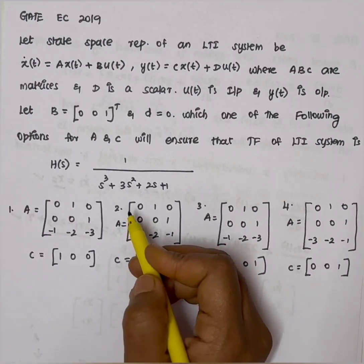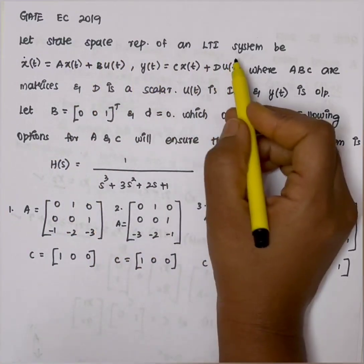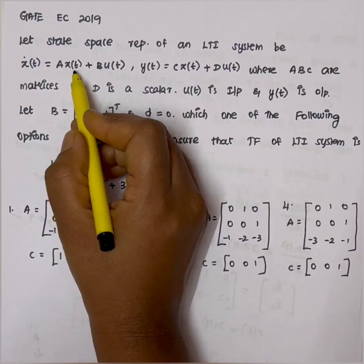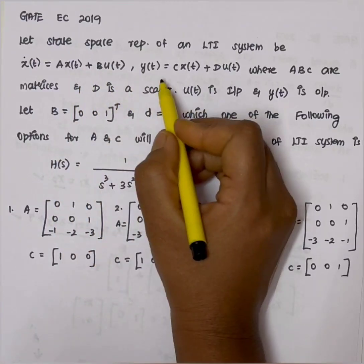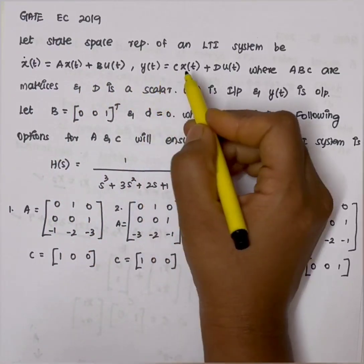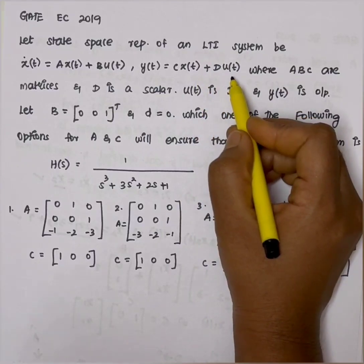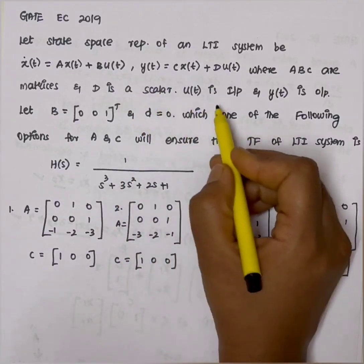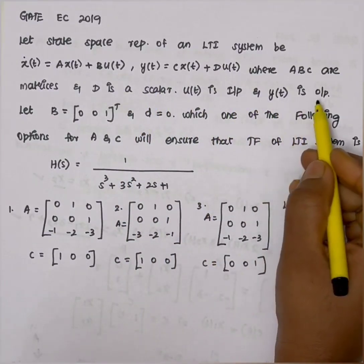So the question is: let the state-space representation of an LTI system be x dot of t equals Ax of t plus Bu of t, and output equation y of t equals Cx of t plus Du of t, where A, B, C are matrices and D is a scalar. u of t is input and y of t is output.